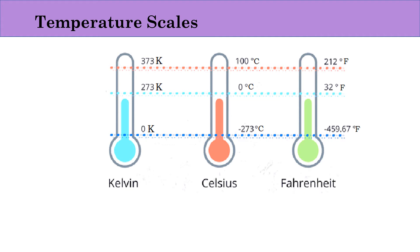The name of each scale is derived from the names of different scientists. As the names are different, the degree of measurement is also different. The main difference is that in the Kelvin scale you will not find any degree sign, whereas in the Celsius and Fahrenheit scales you will find the degree sign. So we read them as degree Celsius or degree Fahrenheit.